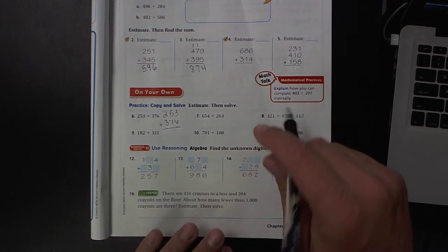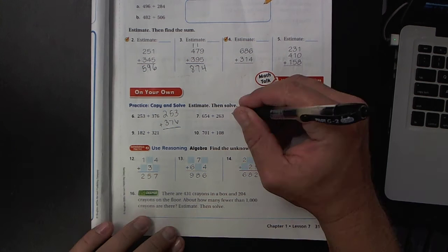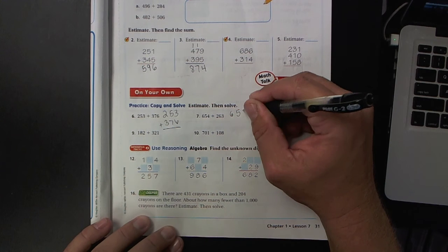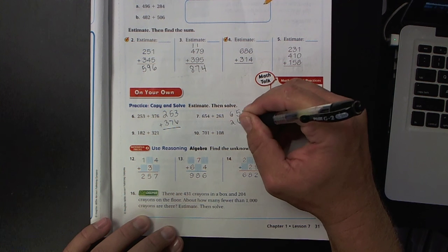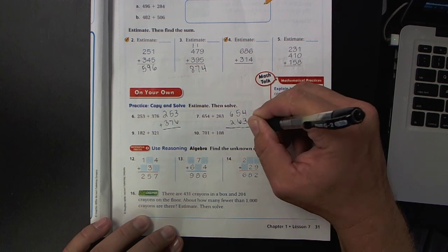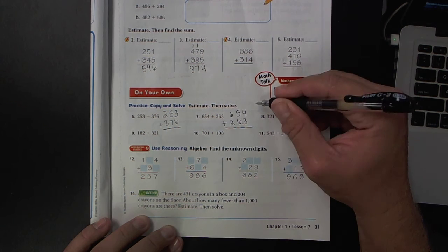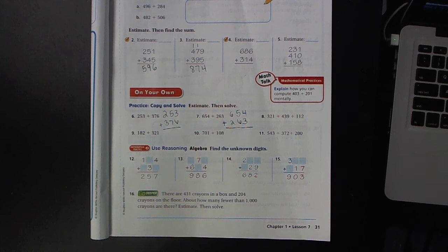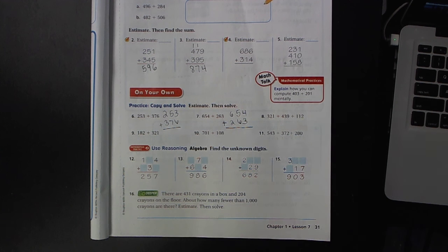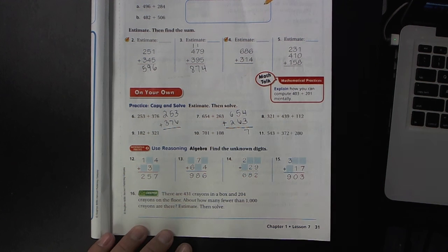All right, we have 654 plus 263, and I'm writing this vertical, which basically means up and down, so that it's easier to add. 4 plus 3 is 7.